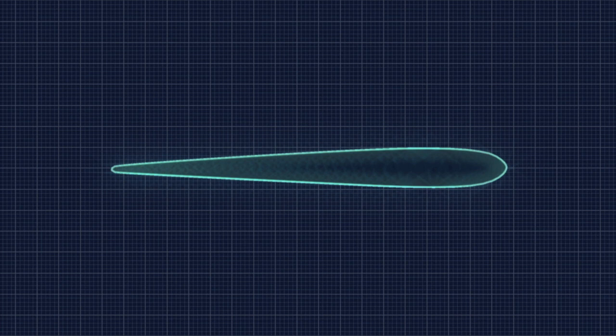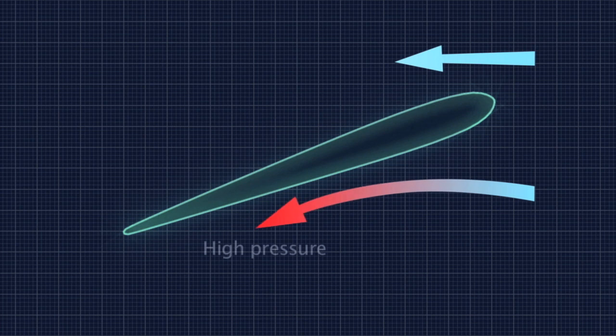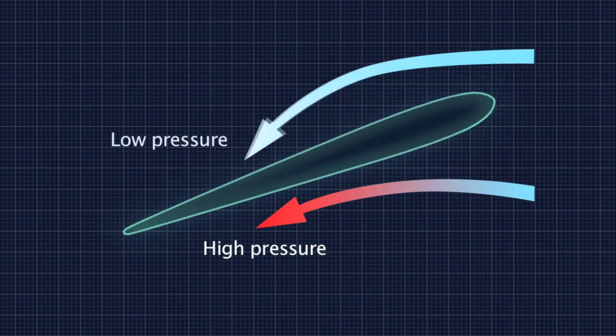When an angle of attack is introduced, the flow hits the underside, causing a high pressure area as the wing is pushed upwards by it. A low pressure area forms above the wing as the flow is sucked into the area of displacement.